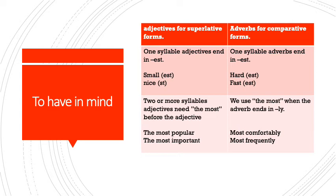We use adjectives with one syllable with the ending '-est.' For example, 'small' is a one-syllable adjective, and to make it superlative you add '-est' — so 'small' becomes 'smallest.' Or 'nice' becomes 'nicest' — since 'nice' ends with an 'e,' you only add 'st.' For adverbs, one-syllable adverbs like 'hard' and 'fast' also need the '-est' ending — so 'hard' becomes 'hardest' and 'fast' becomes 'fastest.'